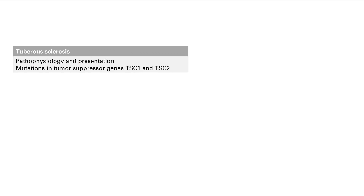Next is tuberous sclerosis, which is due to mutations in the tumor suppressor genes TSC1 and TSC2 — TSC standing for tuberous sclerosis. You're going to have skin findings and small benign tumors. Skin findings include ash leaf spots — a leaf-shaped discoloration — and shagreen patches. The benign tumors include cardiac rhabdomyomas, hamartomas in the CNS and skin causing intellectual disability and seizures, angiofibromas, and renal angiomyolipomas — a blood, fat, and muscle tumor in the kidneys.